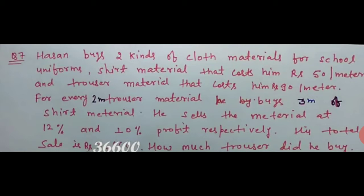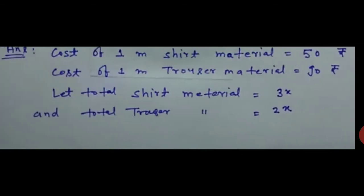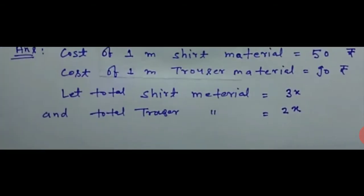For every 2 meters of trouser, he buys 3 meters of shirt material. He sells the shirt material at 12% profit and trouser at 10% profit. The total sale is 36,600. So you are asking how much trouser he purchased. Cost of 1 meter shirt material is 50 rupees and 1 meter trouser is 90 rupees.